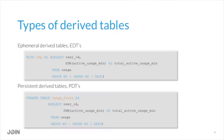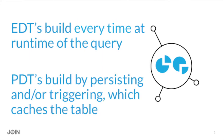We've got two types of derived tables in Looker, and they rhyme. We've got ephemeral derived tables, or EDTs — they generally start with a WITH clause. And we have persistent derived tables, or PDTs. Also, as mentioned this morning, there are now native derived tables — they're still both of these types, just a different syntax using LookML with less SQL. EDTs build at run time of the query every time. PDTs build by triggering and/or persisting via data groups.